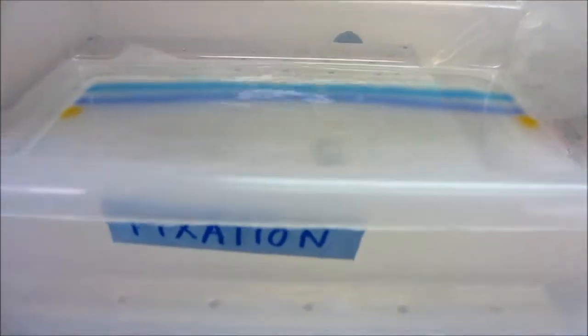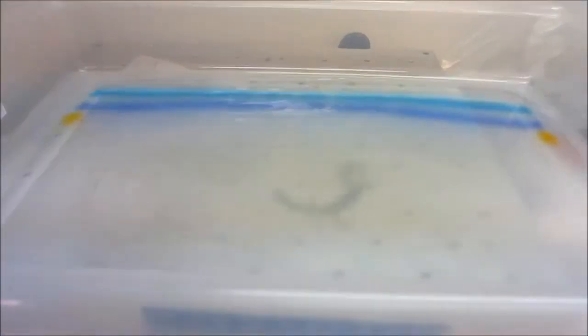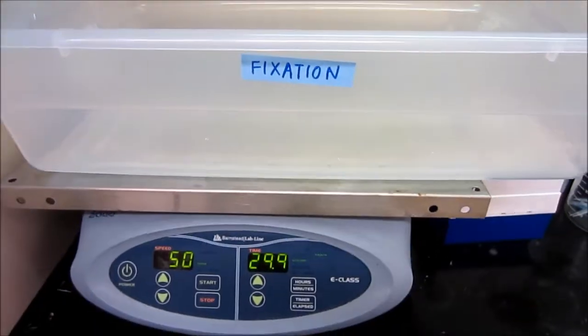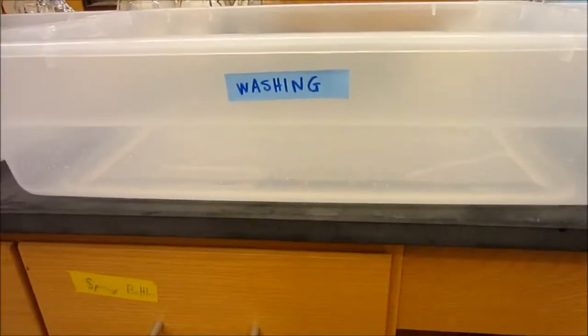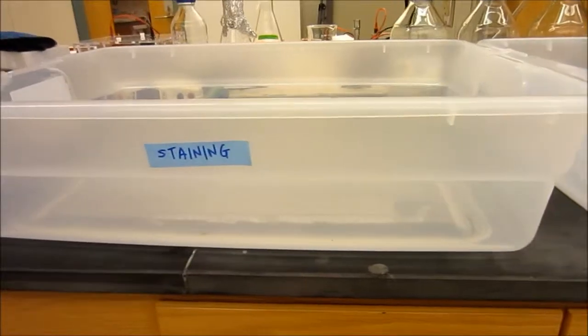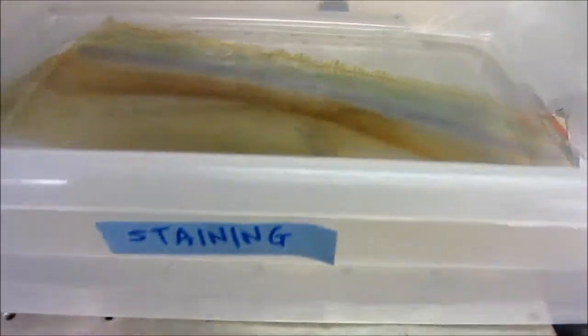The first step in staining is to immerse the gel in cool fixation solution for 5 minutes. After that, the gel is dipped in the impregnation solution for 3 minutes, then washed with distilled water, and finally immersed into staining solution until bands are visible.